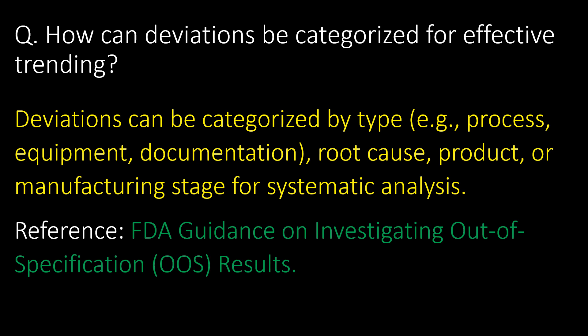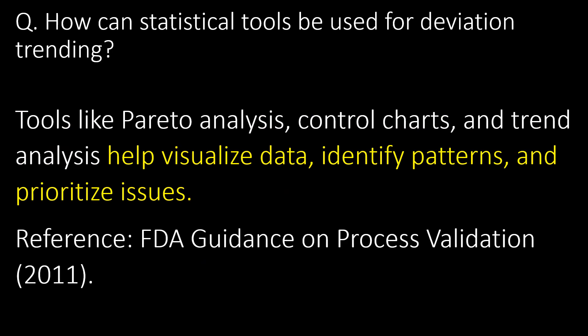How can deviations be categorized for effective trending? Deviations can be categorized by type — for example, process, equipment, or documentation — root cause, product, or manufacturing stage for systematic analysis. Reference: FDA guidance on investigating out-of-specification results.